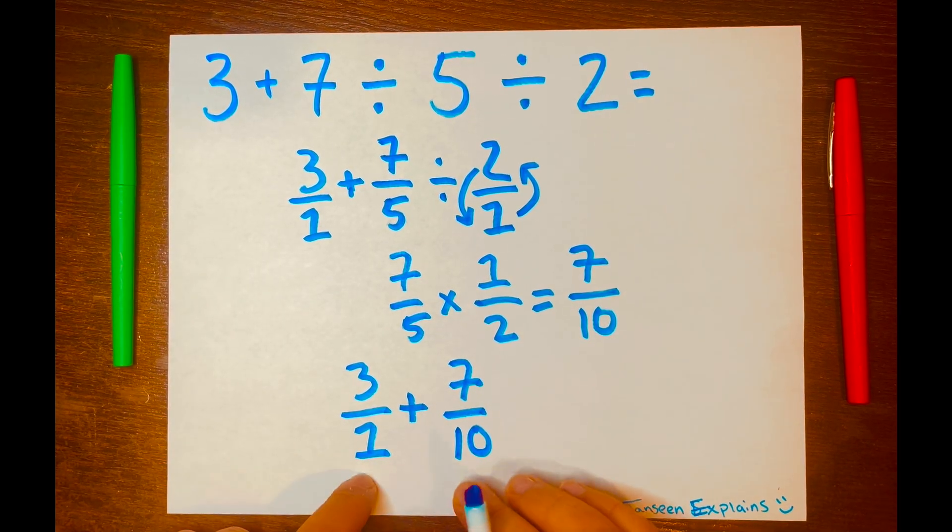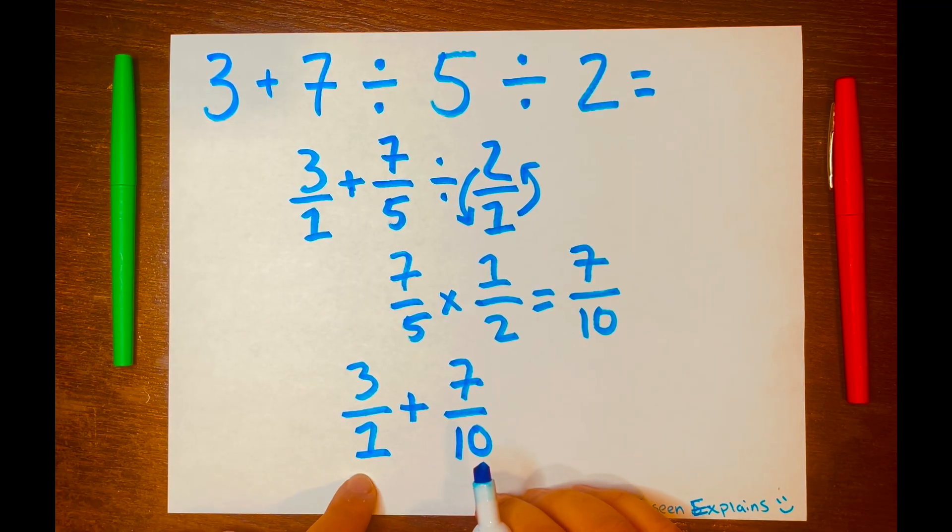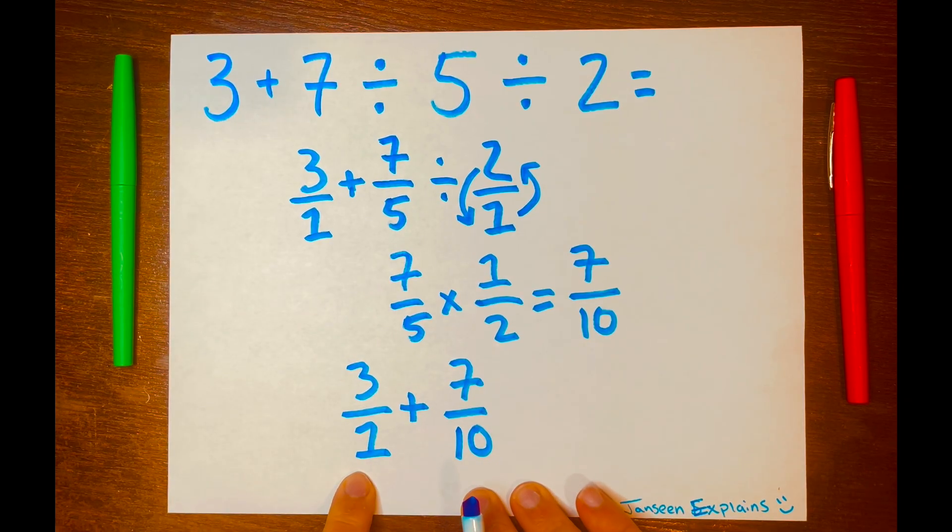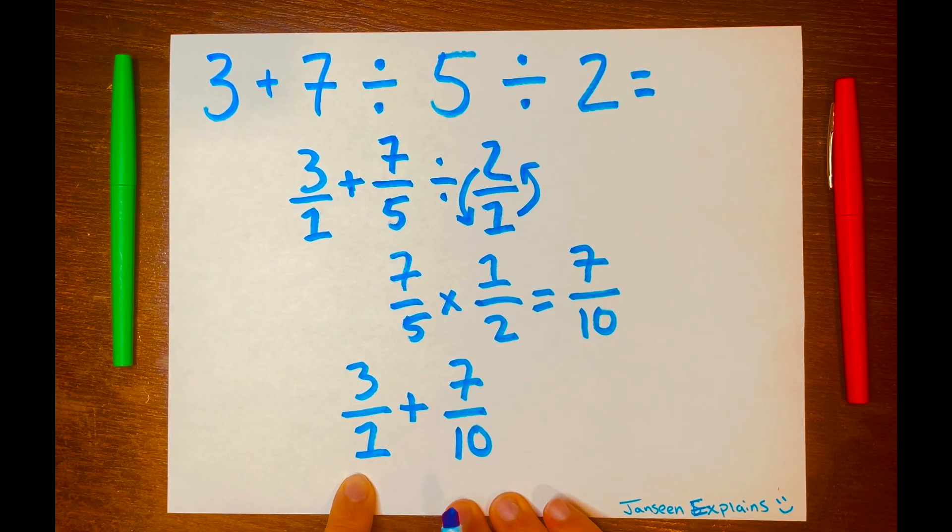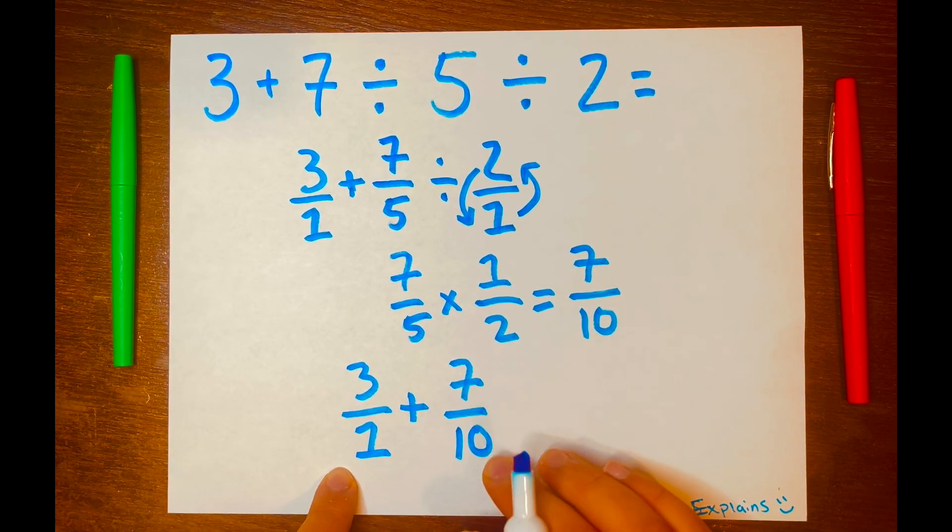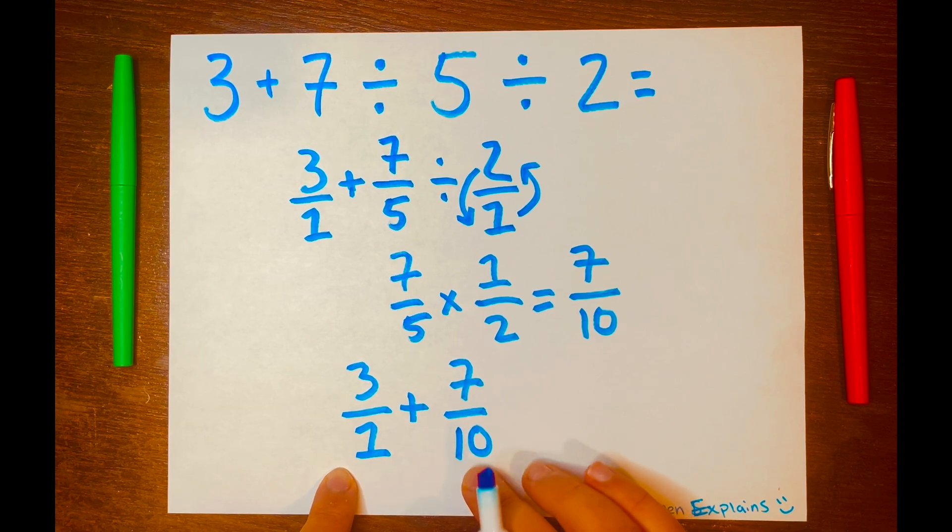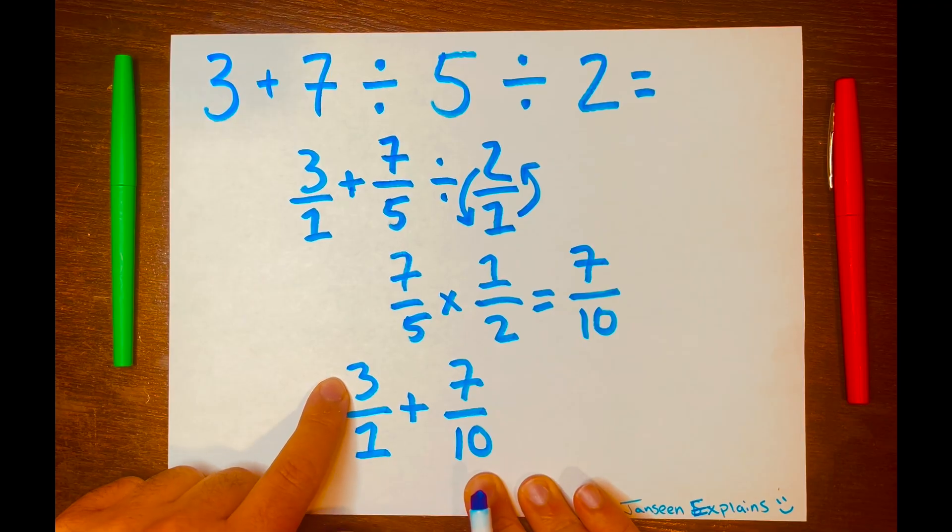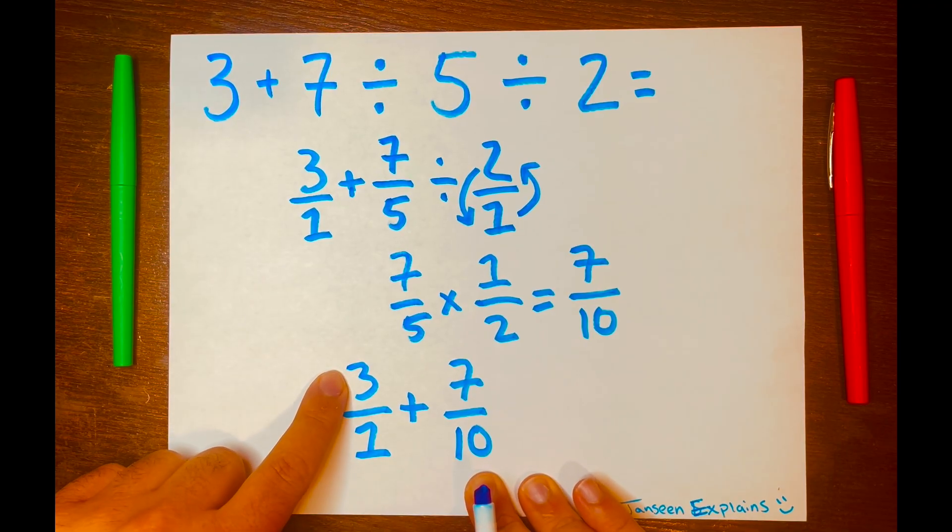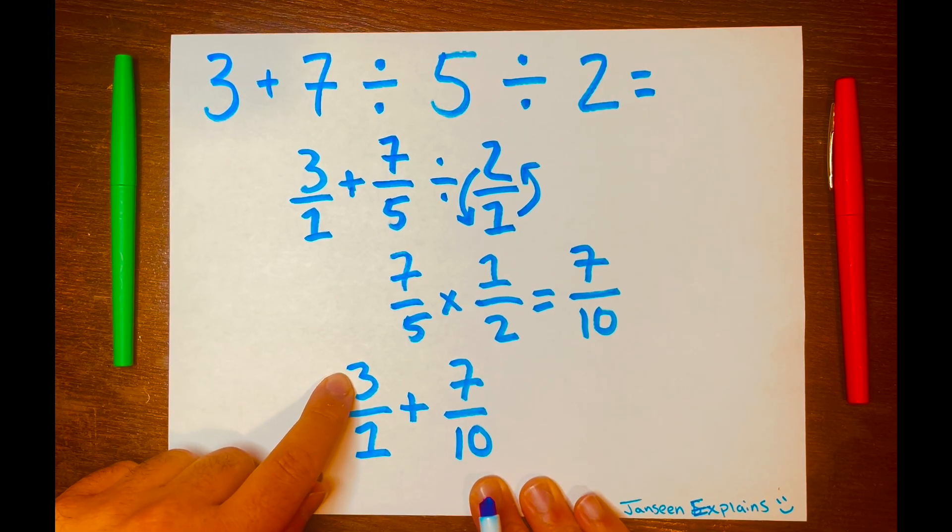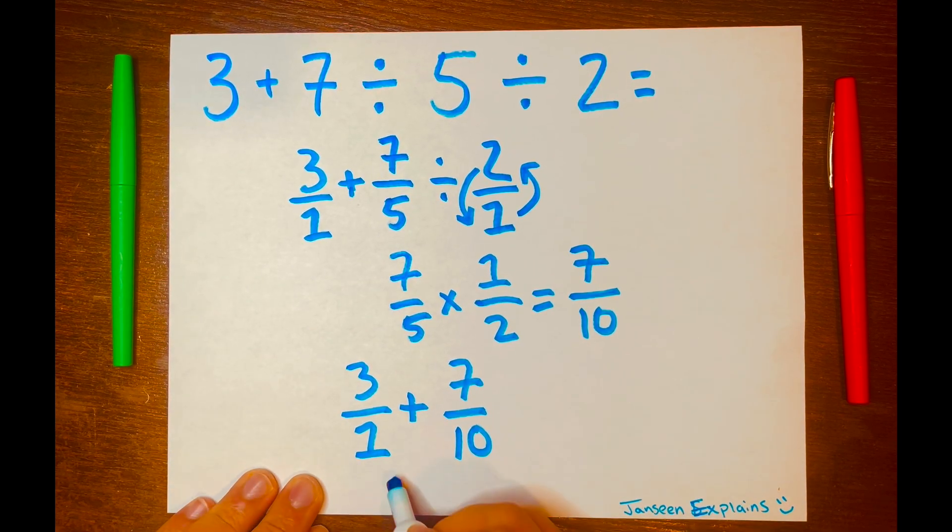And now we have two unlike fractions, and I call them unlike fractions because the denominators are different. So we need to find the common denominator, which is the product of the denominators. So you multiply 1 times 10 gives you 10. So that is our common denominator. And then we need to find the new numerator for the first fraction. So you cross multiply 3 times 10, and that gives you 30.